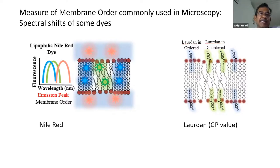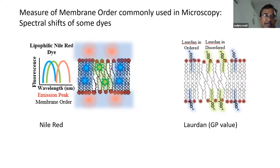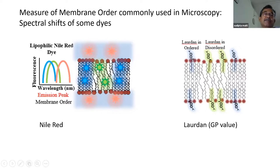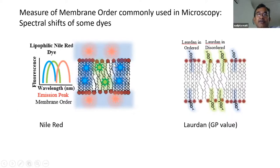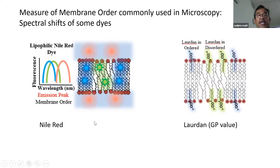If you have a spectrally sensitive detector — these days you can have 32 channels taking different parts of the color — you can build up a spectrum. Molecules in an ordered environment give a blue-shifted spectrum; in a disordered environment, a red-shifted spectrum. Taking that spectral shift from red to green to blue tells you how ordered the membrane is.